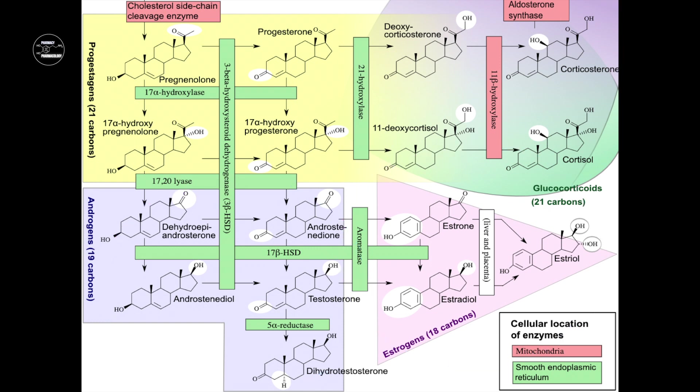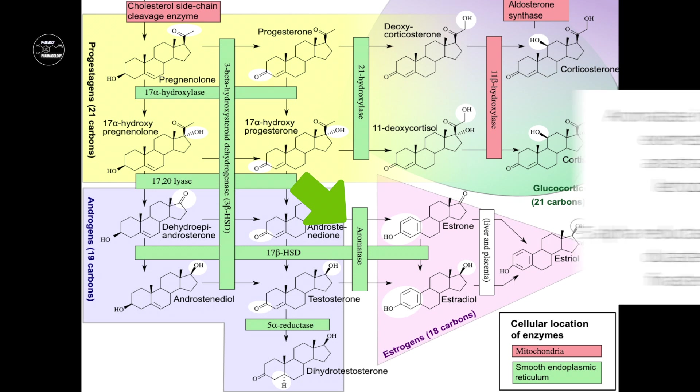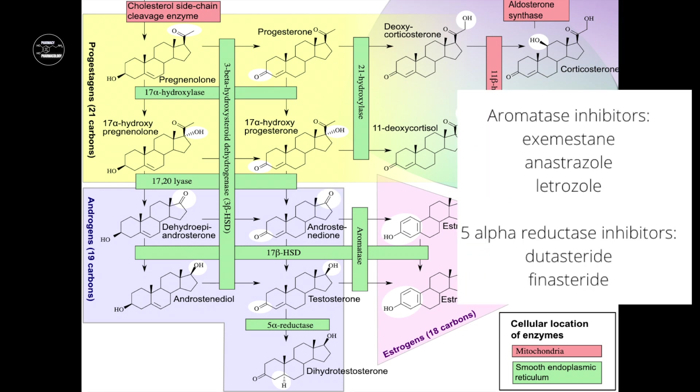Each of these pathways is dependent on specific enzymes. For example, there is aromatase, and there are drugs which inhibit aromatase. There are also drugs which inhibit 5-alpha reductase, for example finasteride.